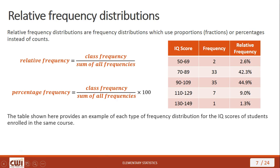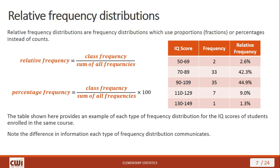The table shown here provides an example of each type of frequency distribution for IQ scores of students enrolled in the same course. Two students had an IQ score between 50 and 69, which is 2.6% of the total population tested. Note the difference in information each type communicates: one communicates the percent in percent form, the other in decimal form.